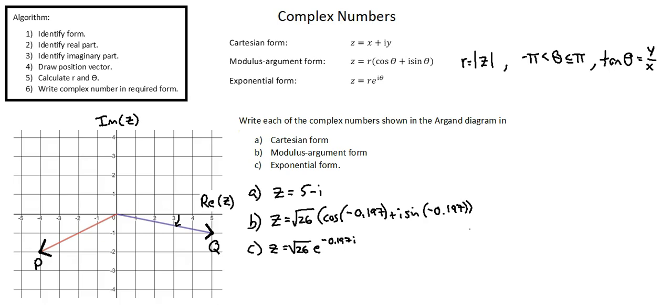And again, a good exercise for you is to work through the algorithm for A, B, and C to ensure that you arrive at the same values. We've completed our requirements, and this concludes the lesson on Argand diagrams and representation of complex numbers.